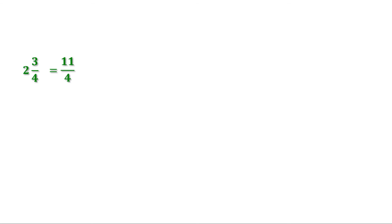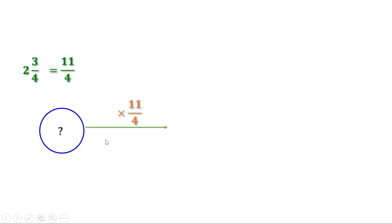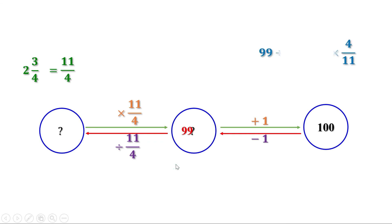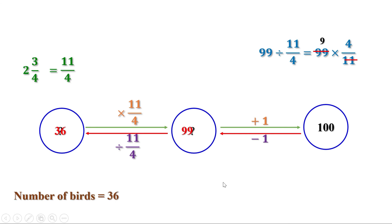So the number of birds multiplied by 11/4, plus 1, equals 100. To find the number of birds, subtract 1 from 100 to get 99. Then divide 99 by 11/4, which equals 99 multiplied by 4/11. 11 goes into 99 nine times, and 9 times 4 is 36. The number of birds is 36.